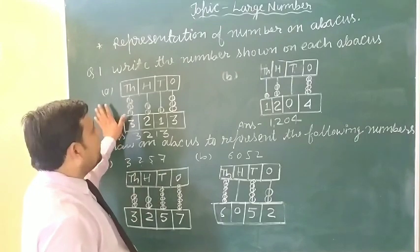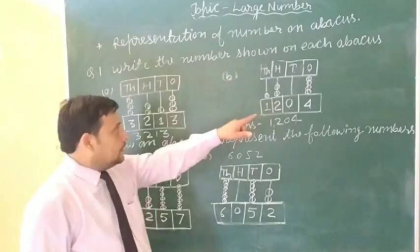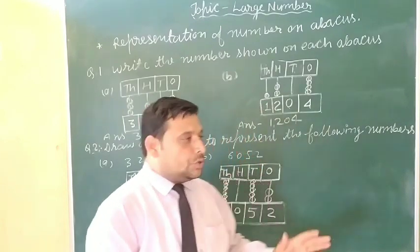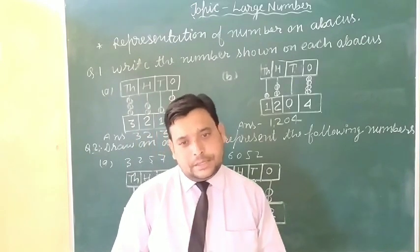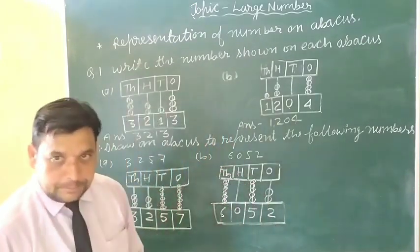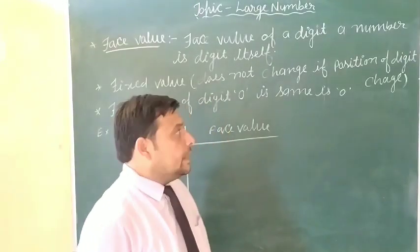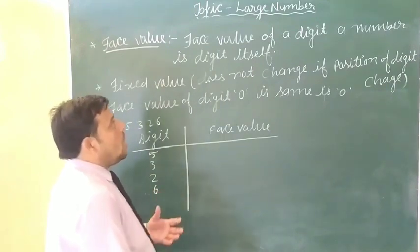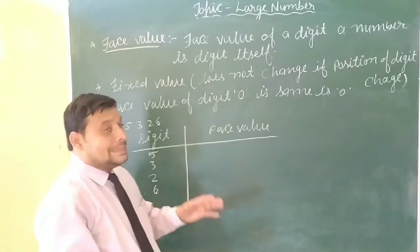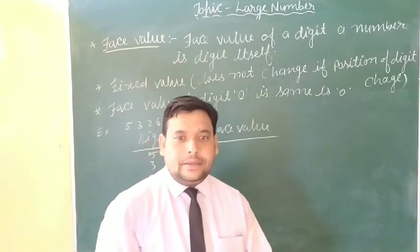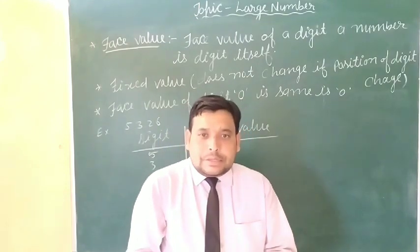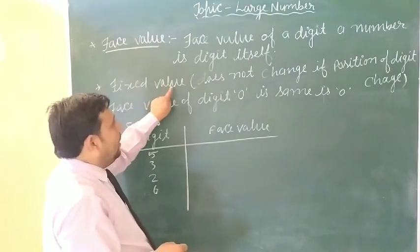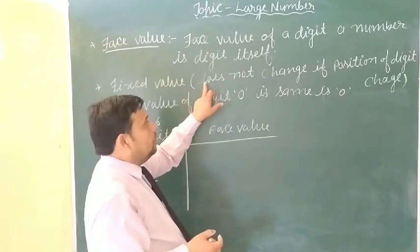Baccho, first question — write a number shown on each abacus; already abacus given tha, numbers write kiye. Second question — numbers given tha, toh number se abacus represent kiya.